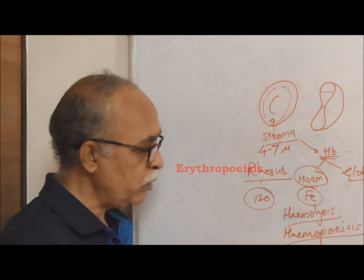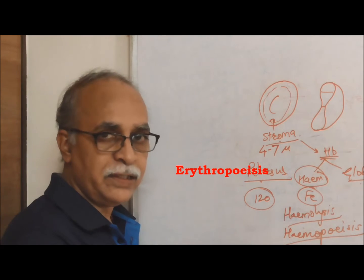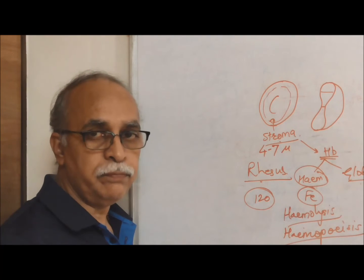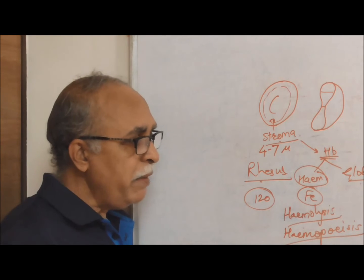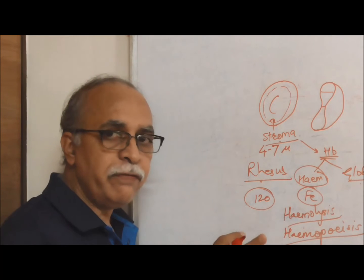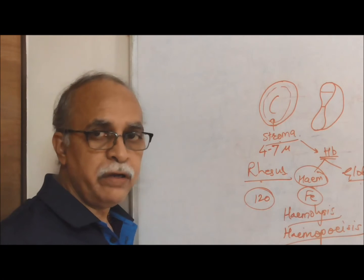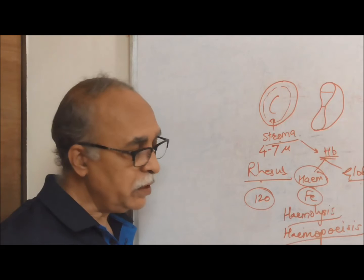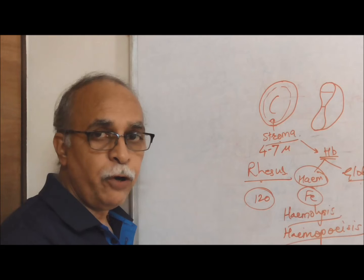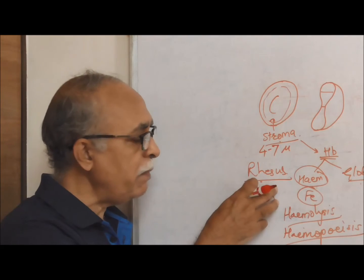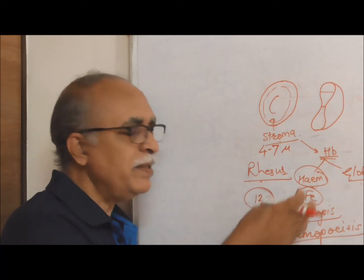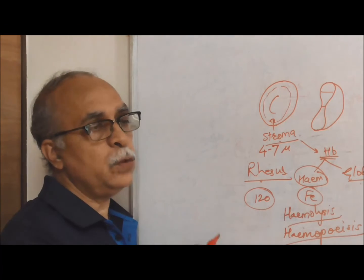In this particular case, you can call the process erythropoiesis, which takes place in the liver and in the bone marrow. In the bone marrow, a stem cell goes through a series of developmental phases and finally gives rise to the mature, enucleated erythrocyte. That process is called erythropoiesis. So after every 120 days, the red blood cells are replaced with fresh ones.